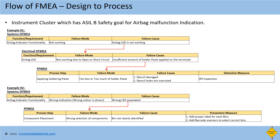Consider instrument cluster as an example. It has an SLB safety goal for airbag malfunction indication, and we will see how the FMEA analysis at system level continues through to process FMEA to identify measures in manufacturing. First example: in the system DFMEA, airbag indication is the function or requirement and 'not working' is the failure mode. Airbag not working can lead to safety goal violation for not indicating the airbag malfunction during vehicle operation. Then consider airbag hardware LED not working as a failure cause related to electrical. In the electrical DFMEA, the airbag LED becomes the function, and not working due to open or short circuit can be a failure mode. Insufficient amount of solder paste applied on the terminals can be one of the failure causes at electrical DFMEA, which is related to manufacturing.